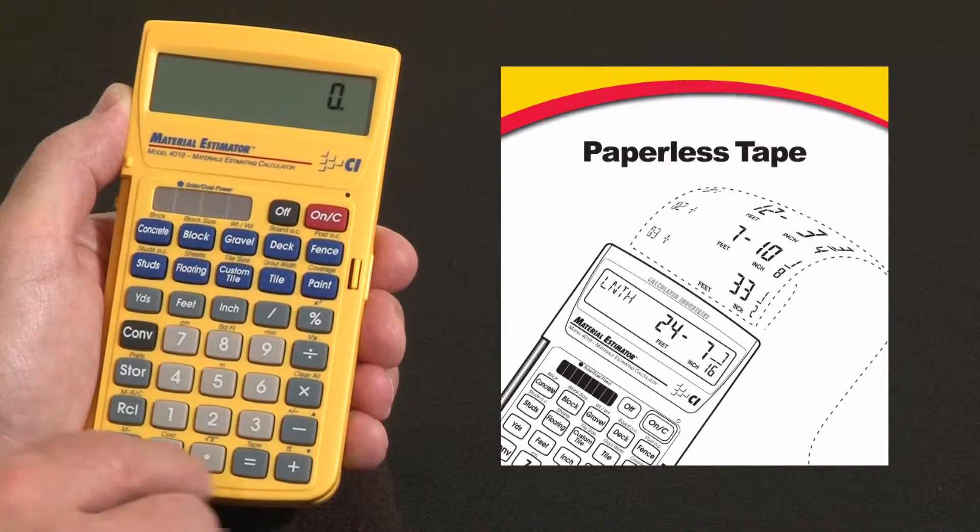A lot of guys will re-enter a string of dimensions two or three times just to be sure they get the same answer, which is smart, but it's a little bit of an unnecessary doubling of your work. You can actually check your answers without doubling your work simply by using this tape function over the equal key.